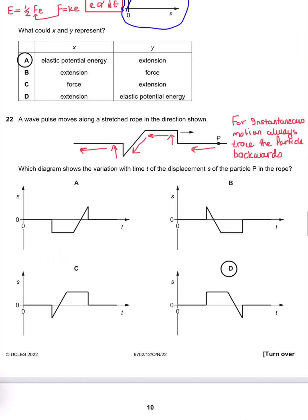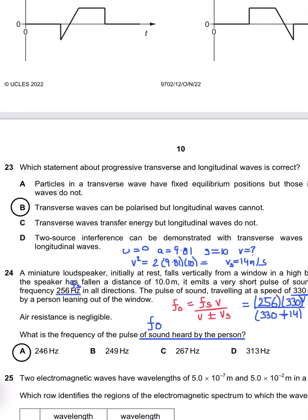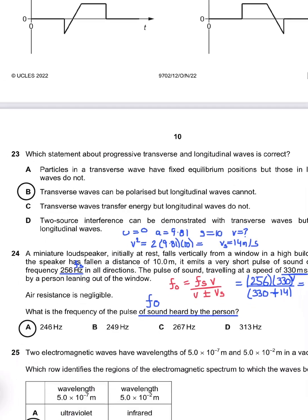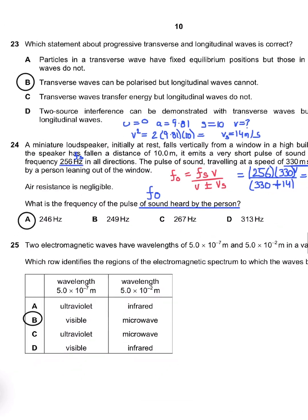Question 22: Which diagram shows the variation? For instantaneous motion of wave, consider the motion opposite to the wave. The wave is traveling from left to right, so consider the motion of P from right to left. It becomes D. Question 23: Which statement about progressive transverse and longitudinal waves is correct? Answer is B: transverse waves can be polarized but longitudinal waves cannot.